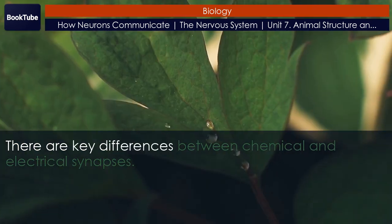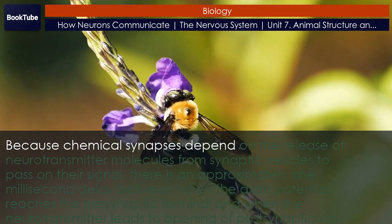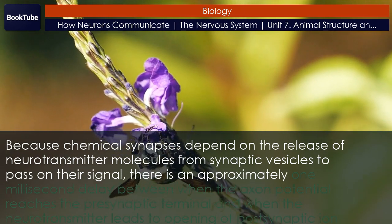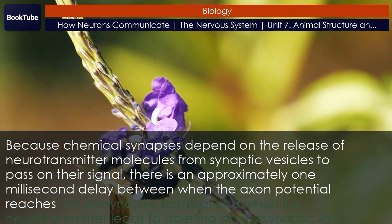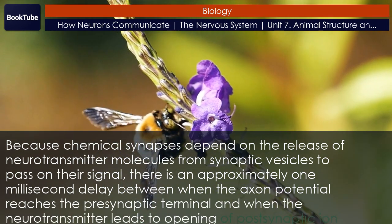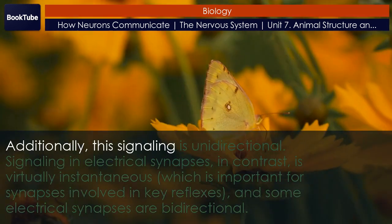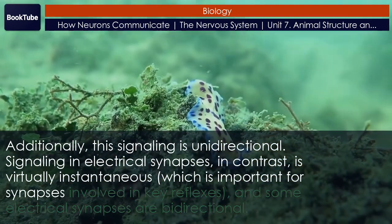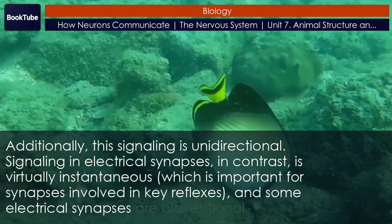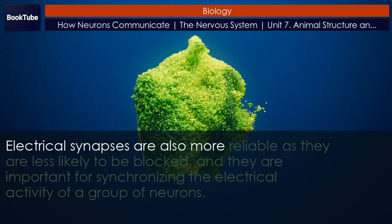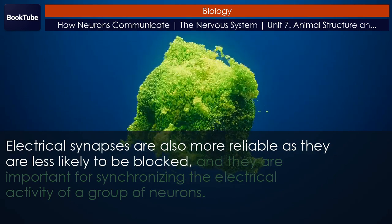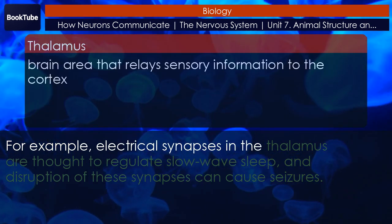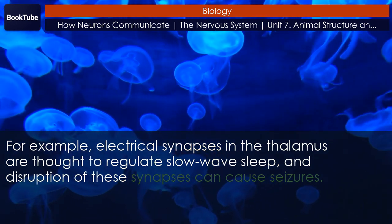There are key differences between chemical and electrical synapses. Because chemical synapses depend on the release of neurotransmitter molecules from synaptic vesicles to pass on their signal, there is an approximately one millisecond delay between when the action potential reaches the presynaptic terminal and when the neurotransmitter leads to opening of postsynaptic ion channels. Additionally, this signaling is unidirectional. Signaling in electrical synapses, in contrast, is virtually instantaneous, which is important for synapses involved in key reflexes, and some electrical synapses are bidirectional. Electrical synapses are also more reliable as they are less likely to be blocked, and they are important for synchronizing the electrical activity of a group of neurons. For example, electrical synapses in the thalamus are thought to regulate slow-wave sleep, and disruption of these synapses can cause seizures.